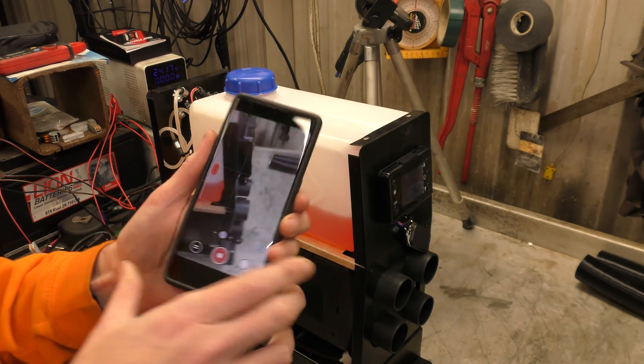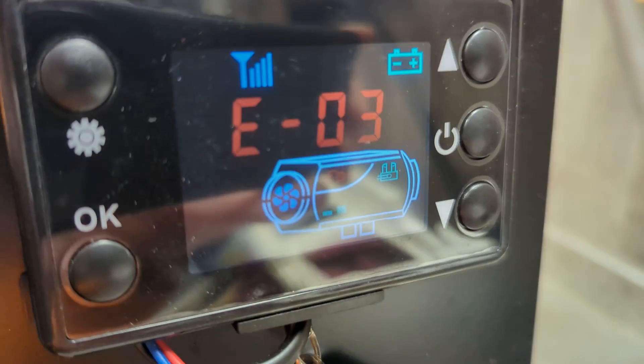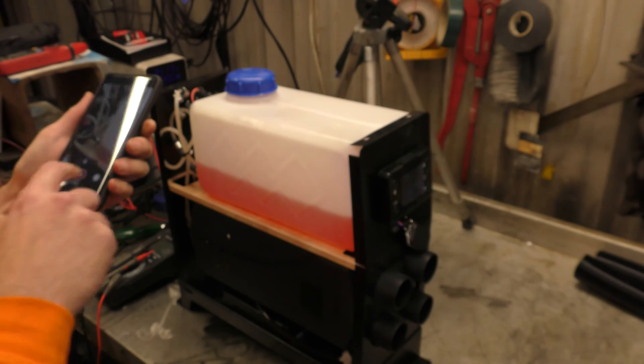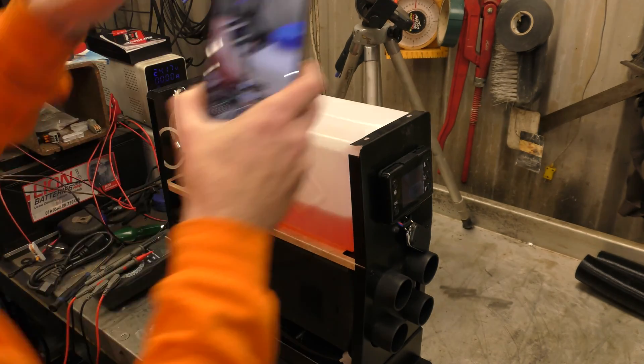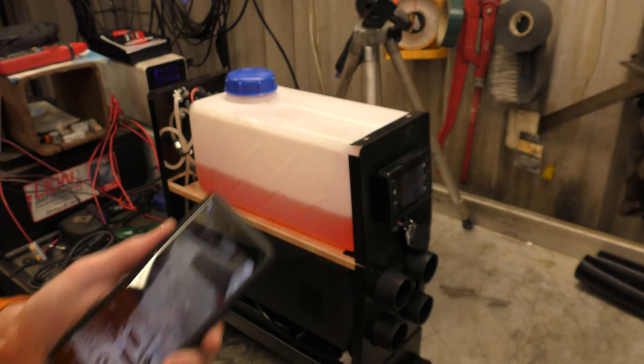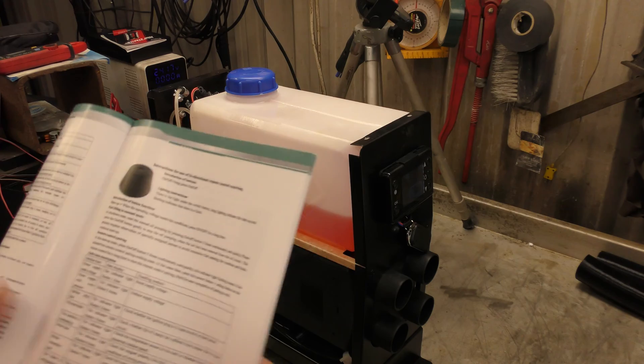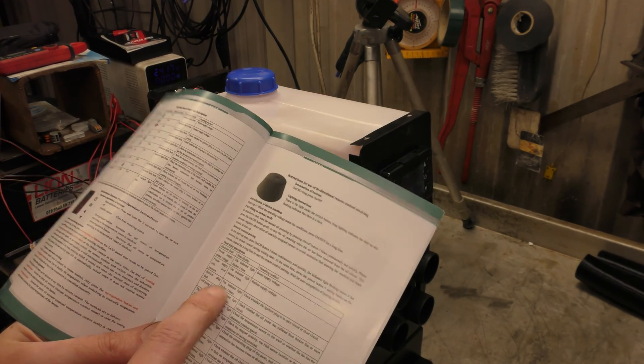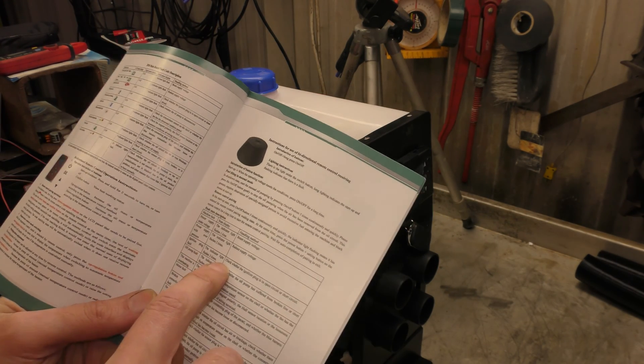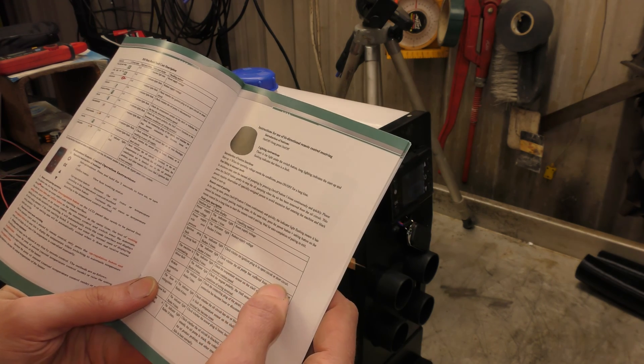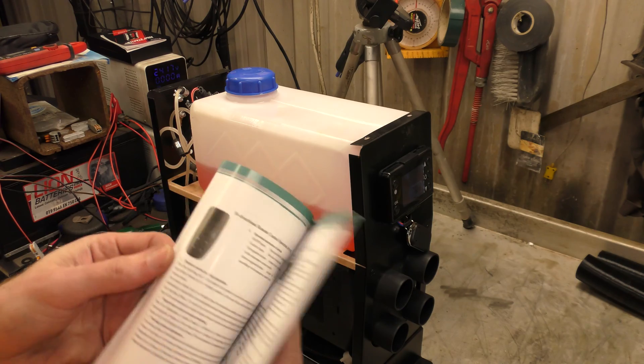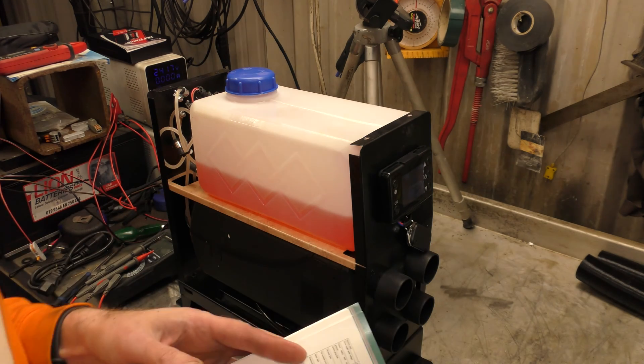Right. Error 03. Let me just film this for you. Error 03. OK. Stop that there. And pause. So, according to the handy dandy instruction manual, an error 03 is ignition plug fault. Check whether ignition plug is in open circuit or short circuit. I imagine it's probably in bits inside the heater.